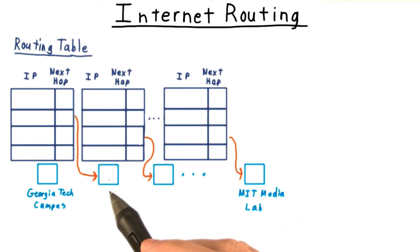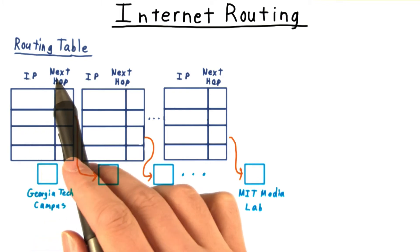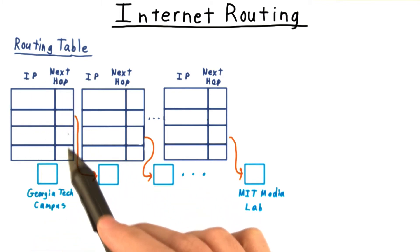The essential data structure here is a routing table that translates the IP address to the next hop, i.e., the address the packet should be sent to next.